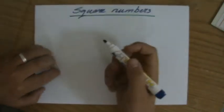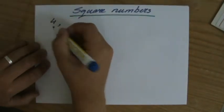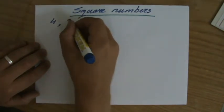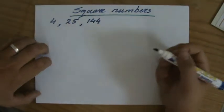I'm just going to write a few square numbers down to get us started. For instance, 4 is a square number, and for instance 25 is a square number, and 144 is also a square number.